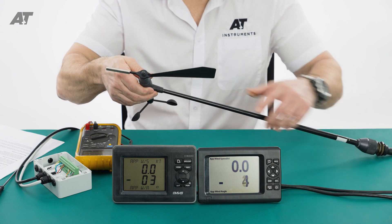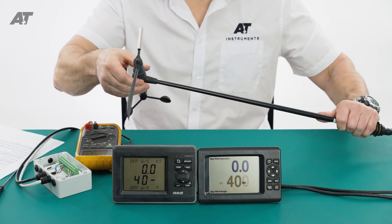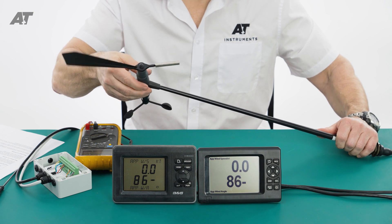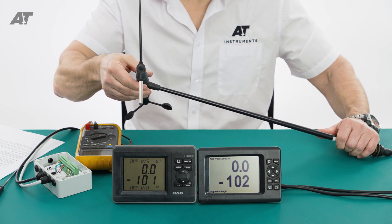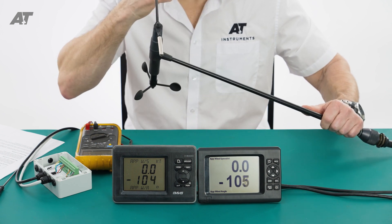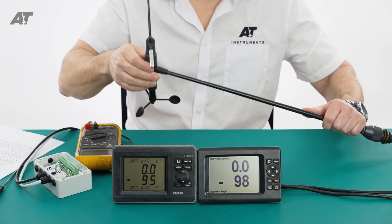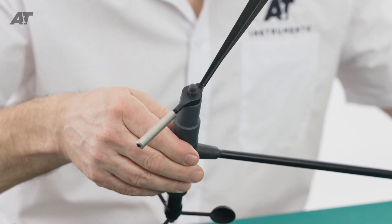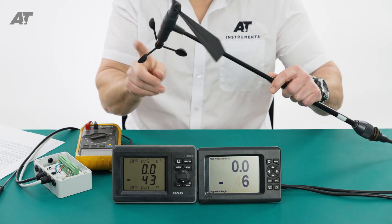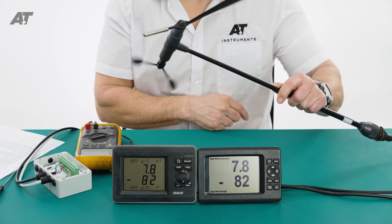To test, we need to point the vane forwards, 90 degrees to starboard, aft, and 90 degrees to port. Check it works at those four points. It's possible for it to show okay for some of the way around but not all. Therefore, it should be checked at all four points. The wind speed should measure when you spin the cups.